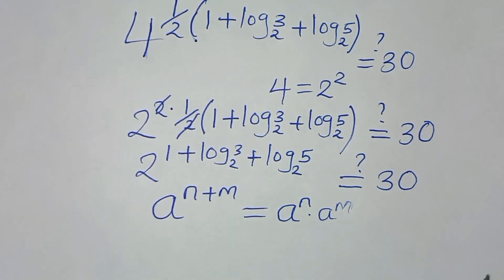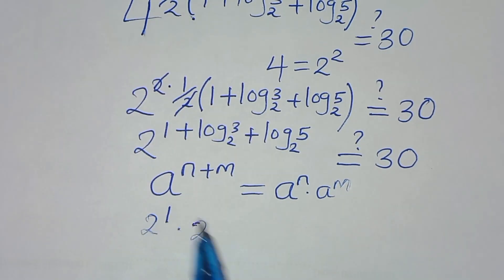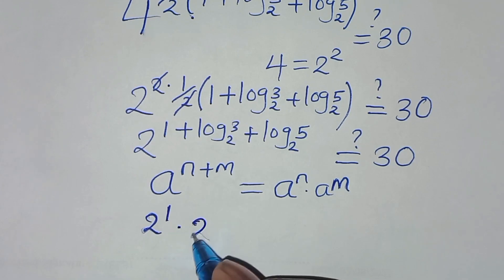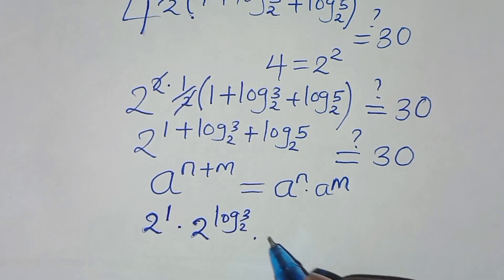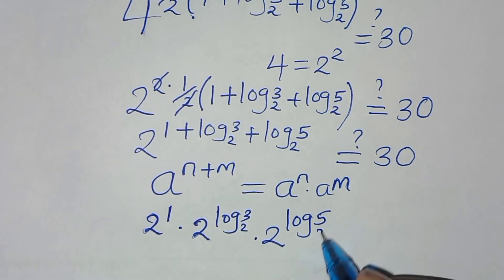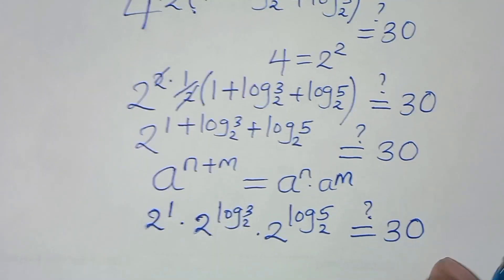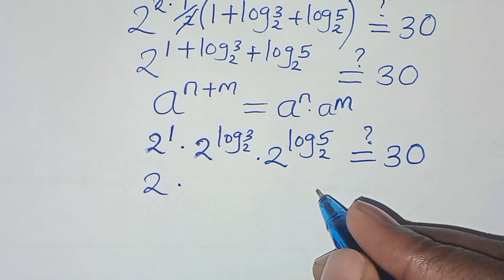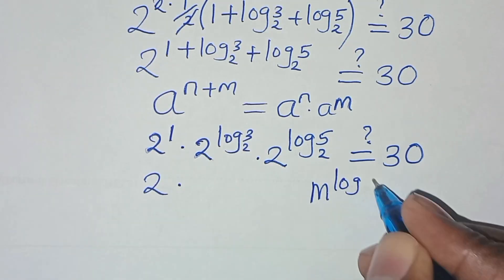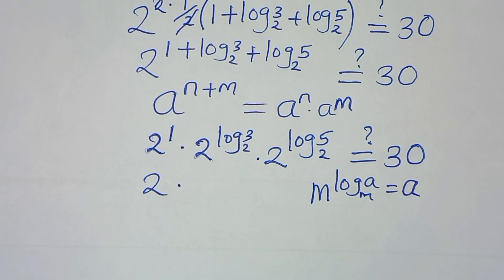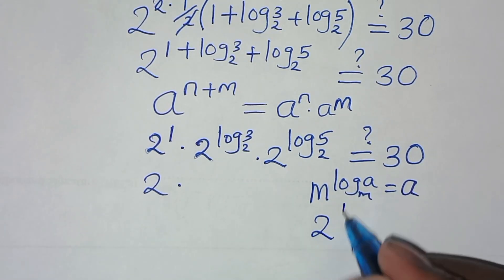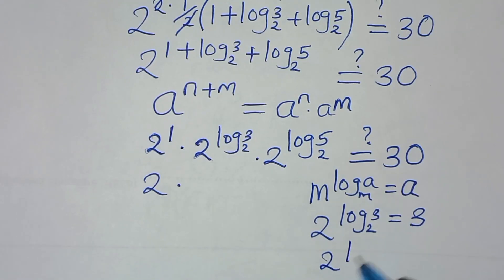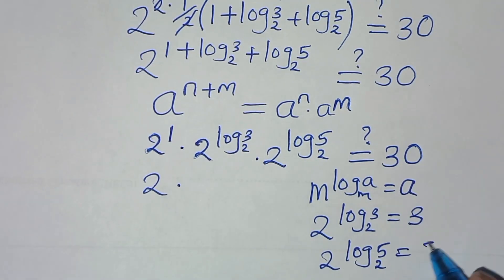Applying this exponent property, we have 2 to the power 1, multiplied by 2 to the power log₂3, times 2 to the power log₂5. This should give us 30. Now using the identity M to the power log base M of A equals A: 2 to the power log₂3 gives 3, and 2 to the power log₂5 gives 5.